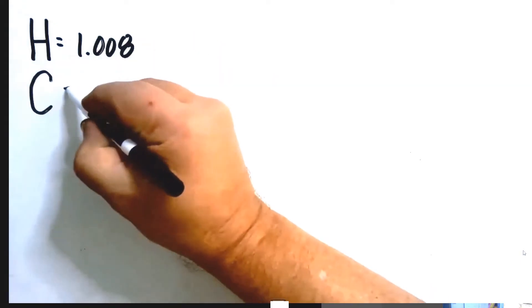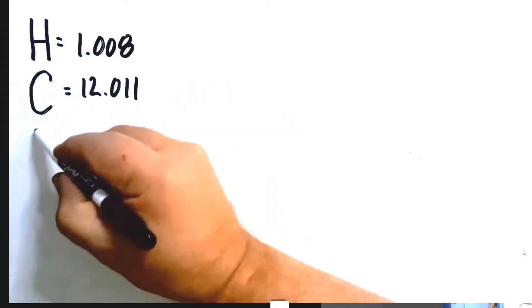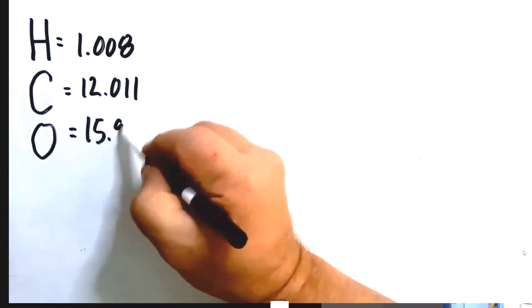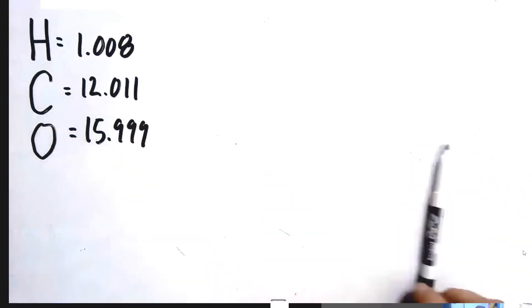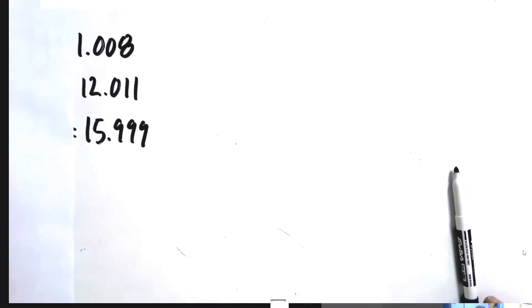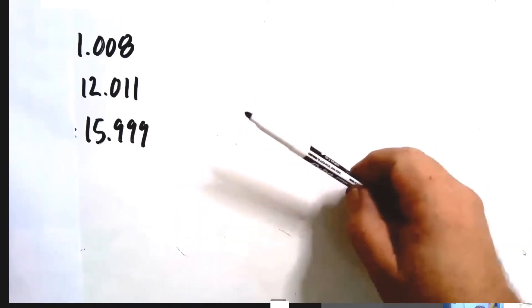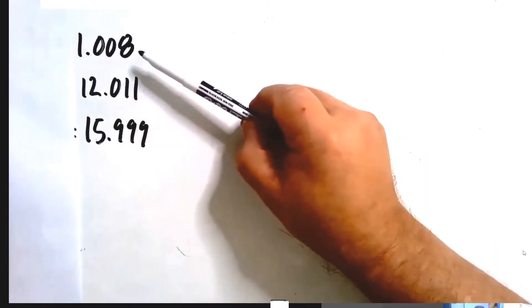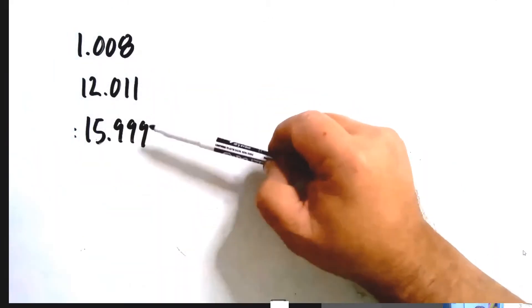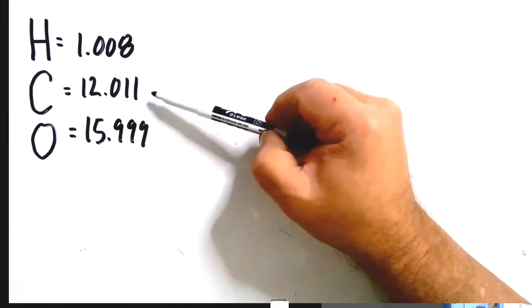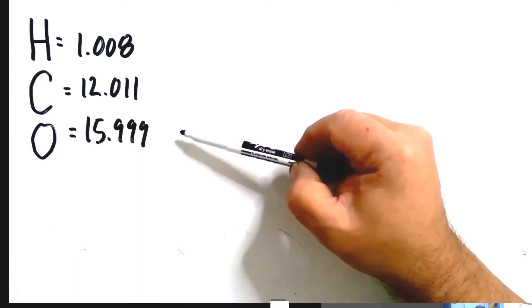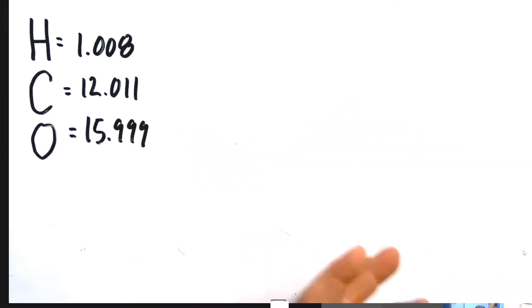The molar mass for carbon is 12.011 and for oxygen it's 15.999. When we say these are molar masses, what we mean is: there is a certain very large number of atoms called the mole. It's easier to say 'the mole' than to say 6.02 × 10²³. These numbers are in grams — if you have one mole of hydrogen it has a mass of 1.008 grams, one mole of carbon is 12.011 grams, one mole of oxygen is 15.999 grams.